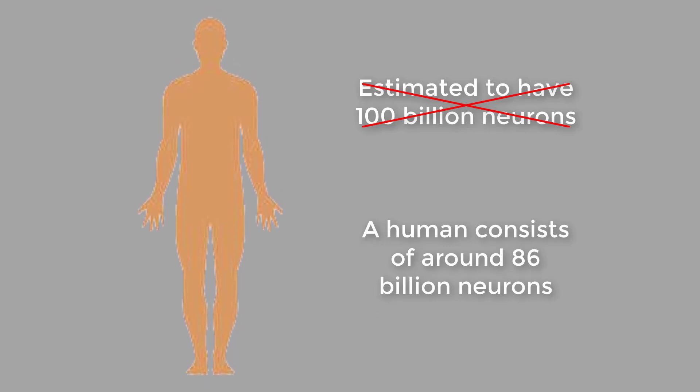Even though the human body might not consist of the mythic 100 billion neurons as previously estimated, 86 billion is still nothing to sneeze at.